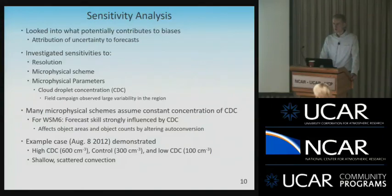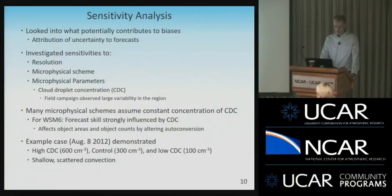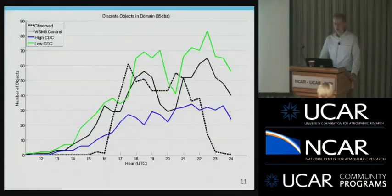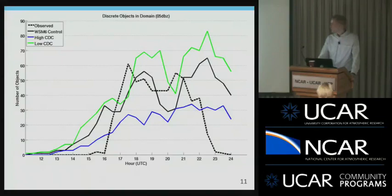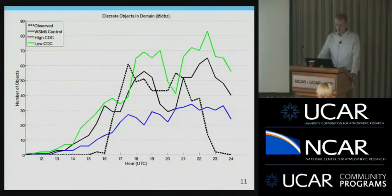Once we put the observed cloud droplet concentrations into WSM6, we found that forecast scales strongly tied to just that one variable — object areas and counts were most influenced by changing the cloud droplet concentration number to observed values. I'll demonstrate with the August 8, 2012 case: the high CDC case was 600 cloud droplets per cubic centimeter, which was the observation for that day of scattered shallow convection, mostly below the melting layer. In a time series of objects across that day, the control did pretty well forecasting the number of objects but seemed to have a time offset. Dropping the concentration to lower maritime values generated more objects, while increasing it cut the number significantly.